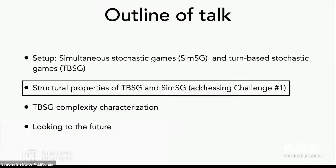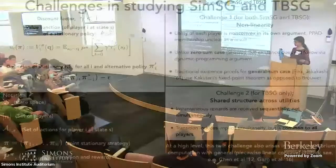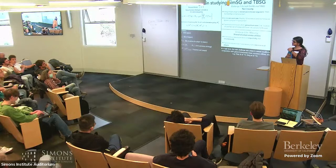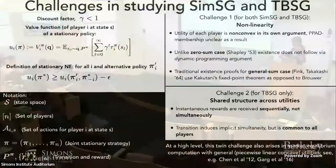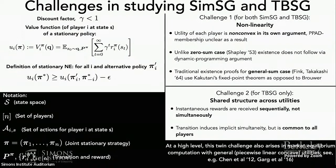Question: In the first challenge, you mentioned a non-convexity issue — equilibria are not guaranteed to exist when you have non-convexity. So why is equilibrium computation a well-defined problem? It is known that equilibria are guaranteed to exist. These are specialized proofs to the case of stochastic games. What I'm going to talk about in just a bit is that we were able to identify a special type of structure that guarantees existence.